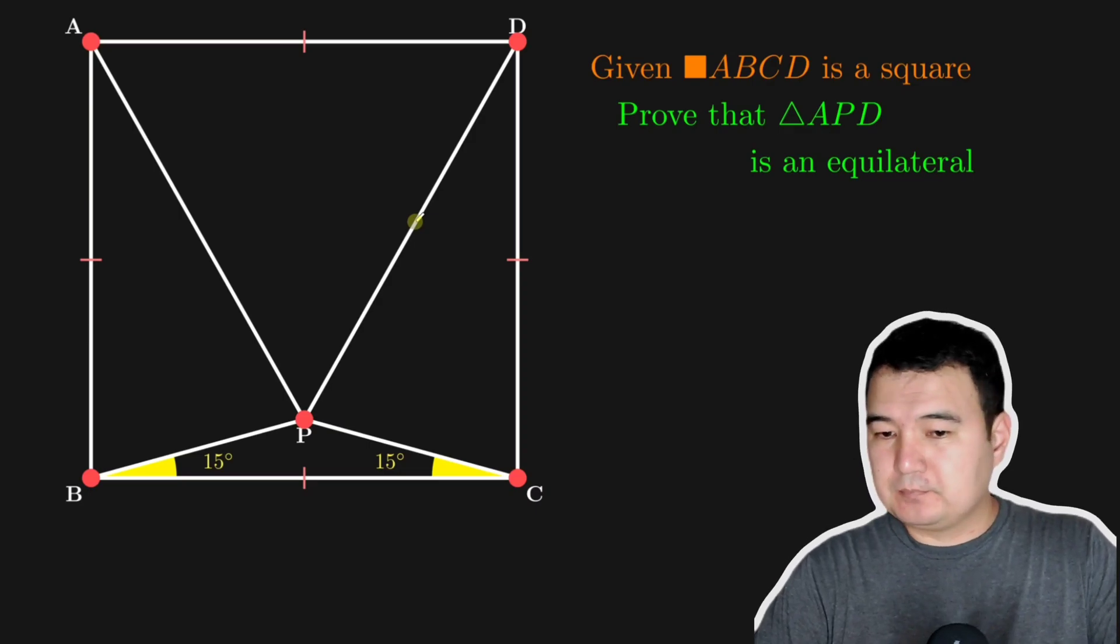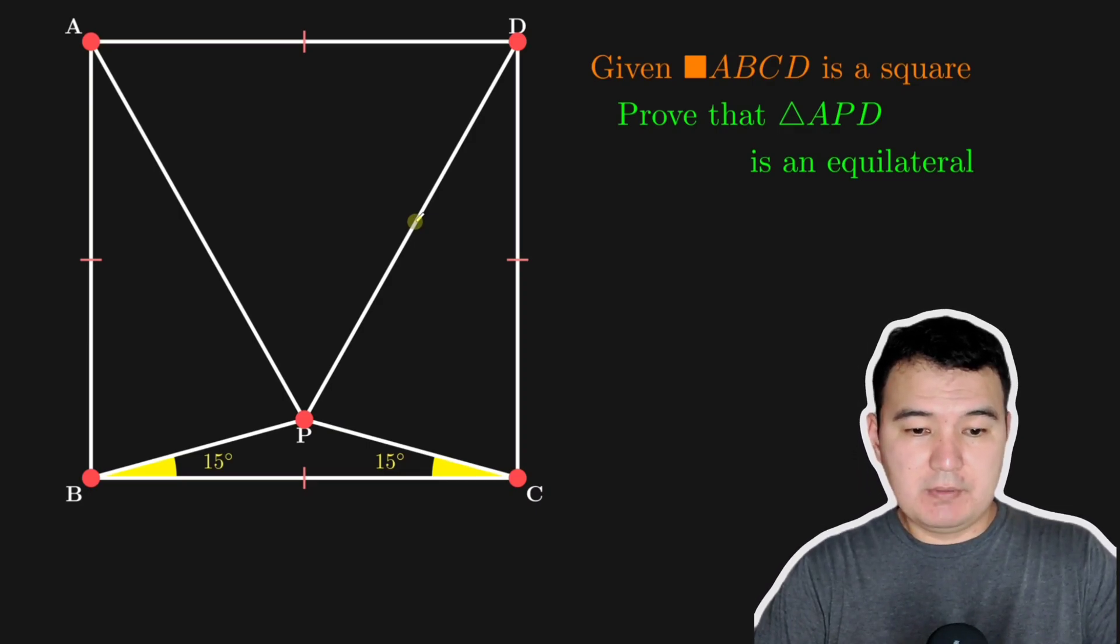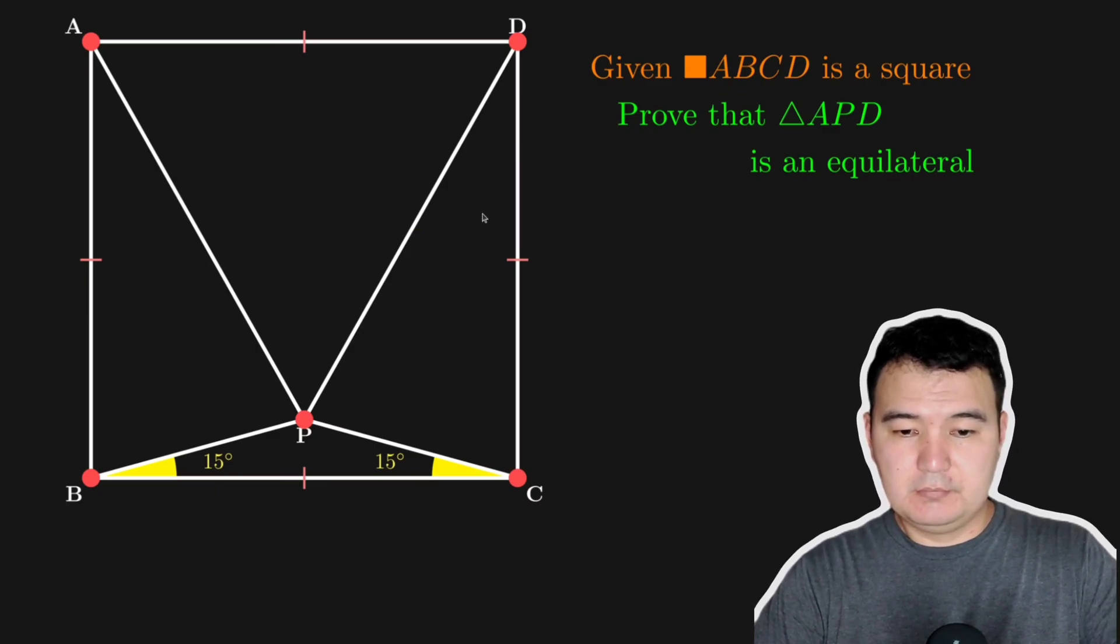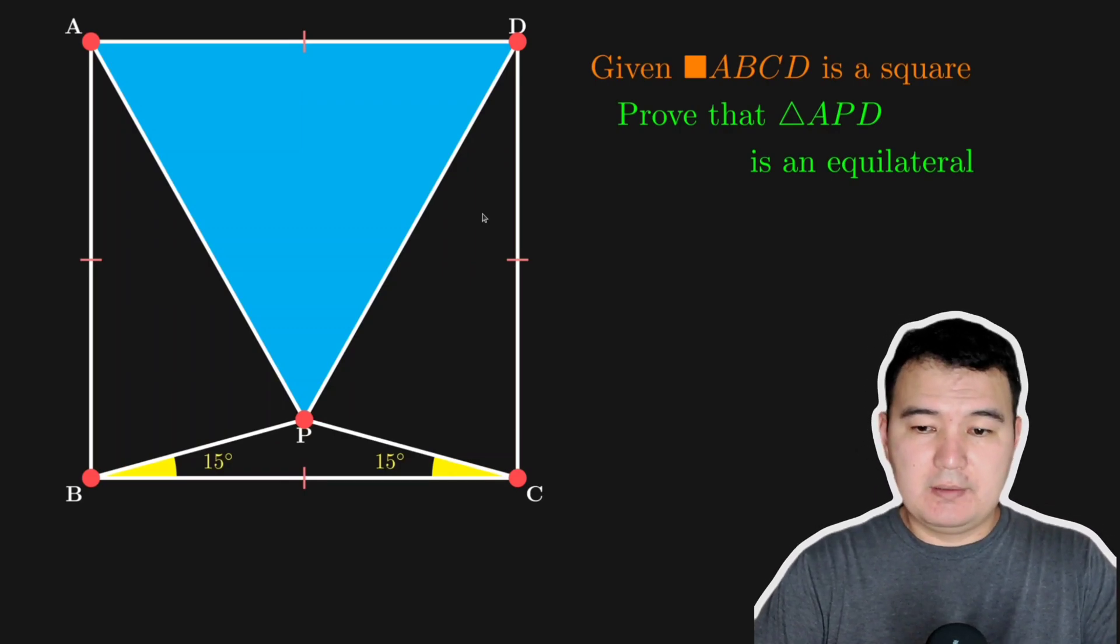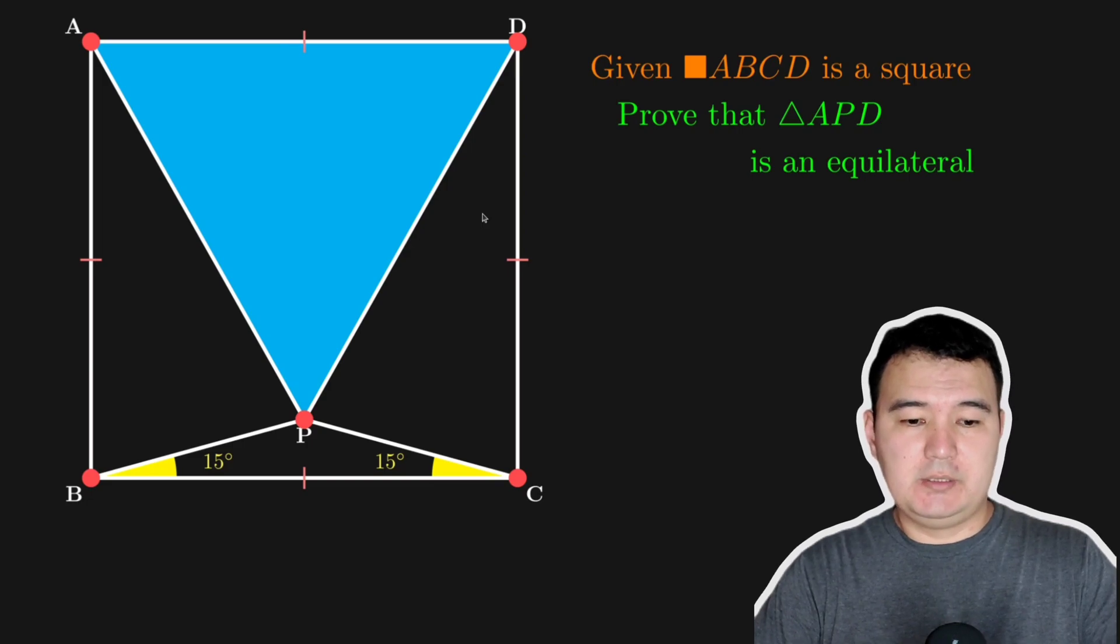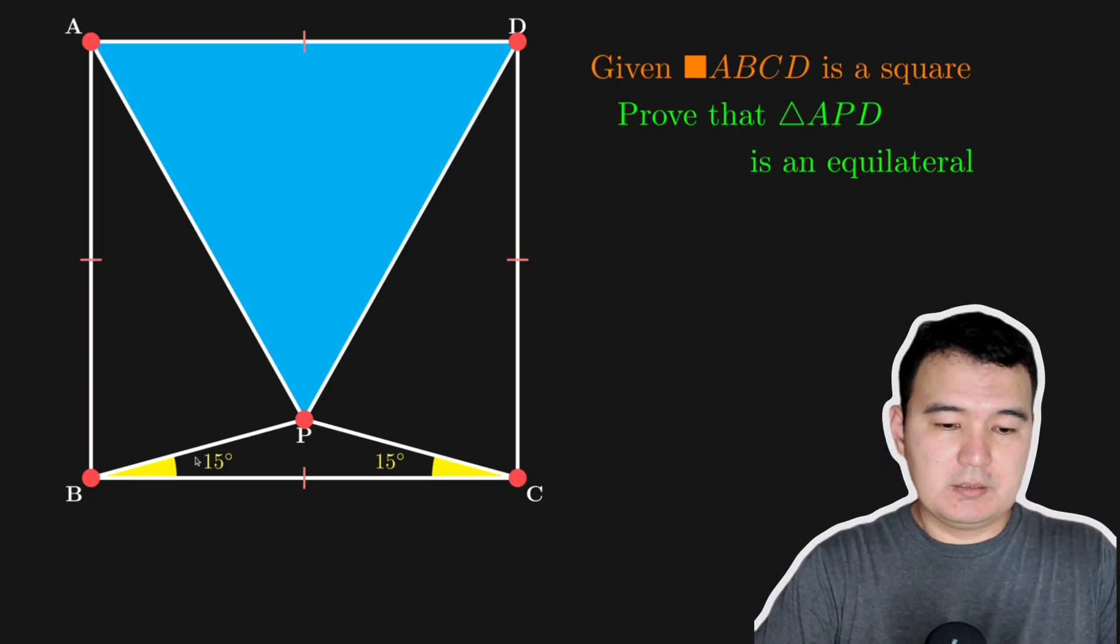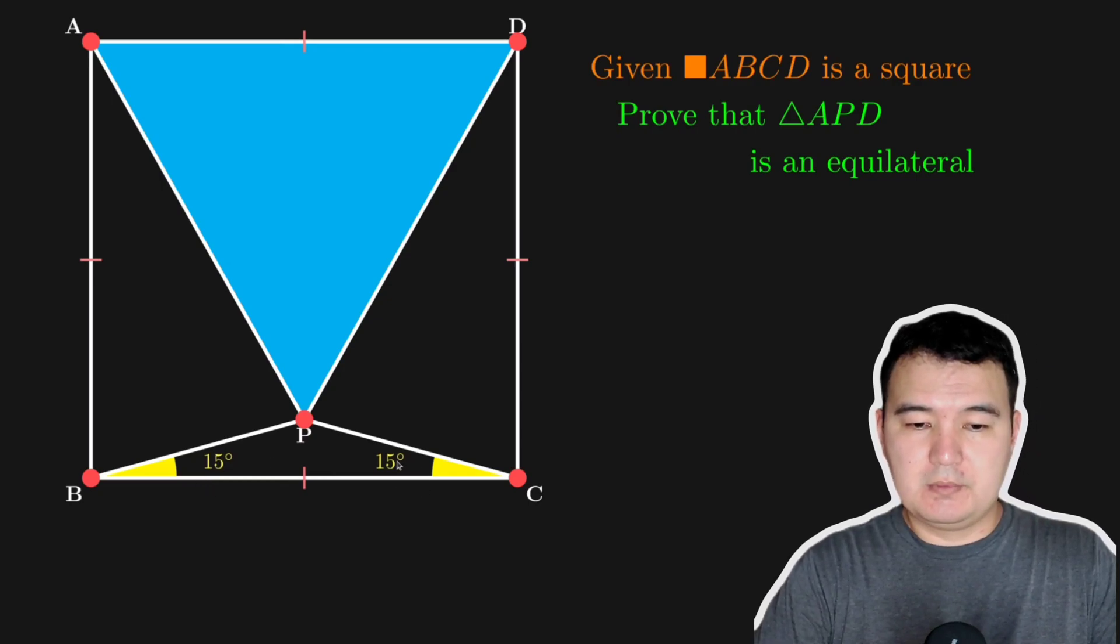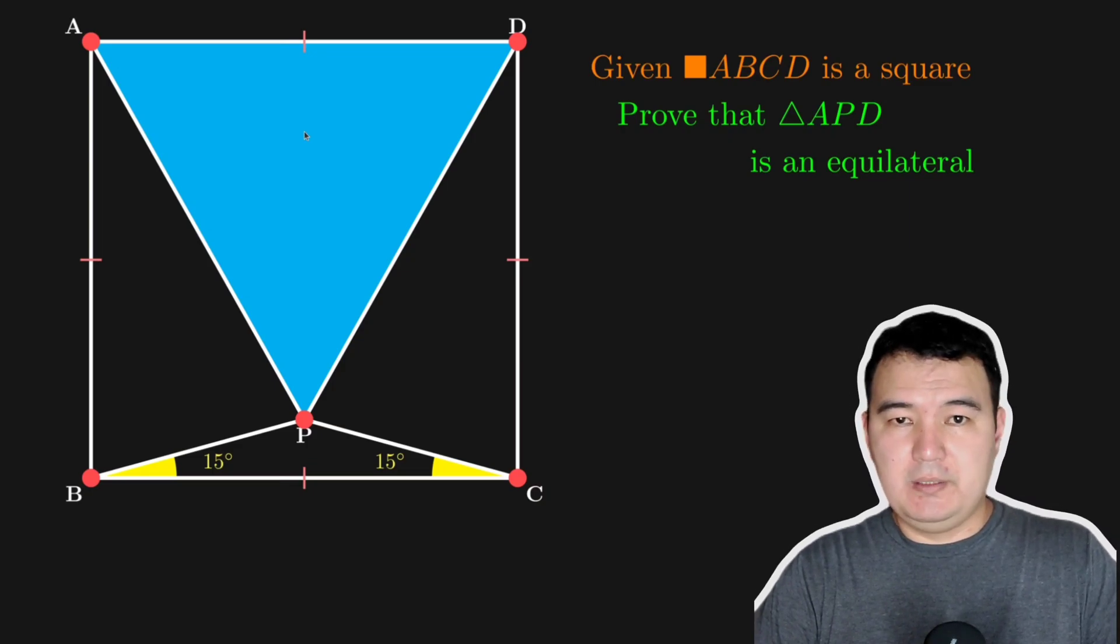Okay, what's the problem? So let's take a look at the problem. You're given this square. So the problem starts with this square. And we want to prove that this triangle is an equilateral triangle. And we know that here we have two 15 degree angles, this one and this one. So we want to prove the equilateral triangle ADP.